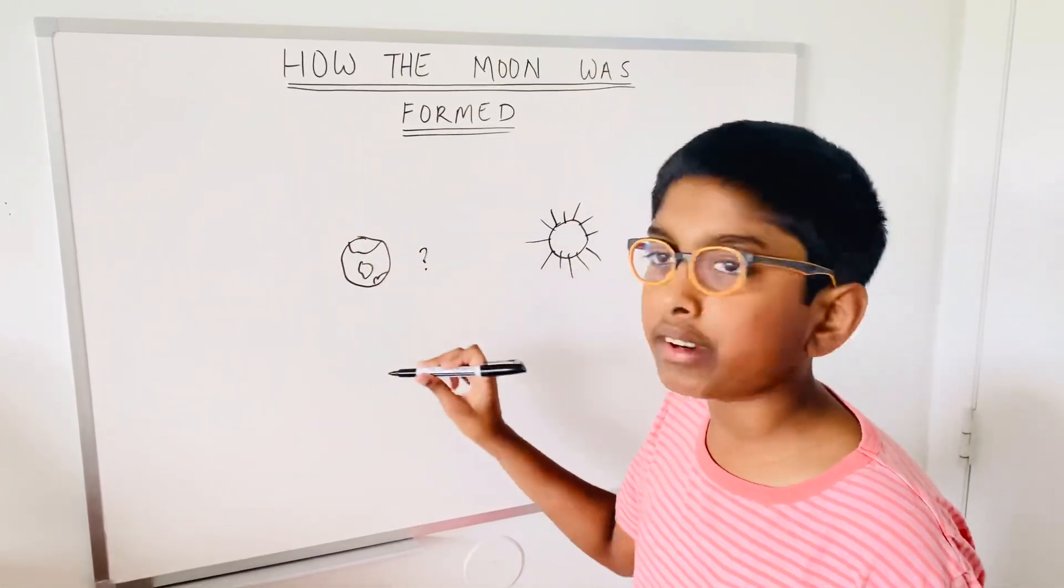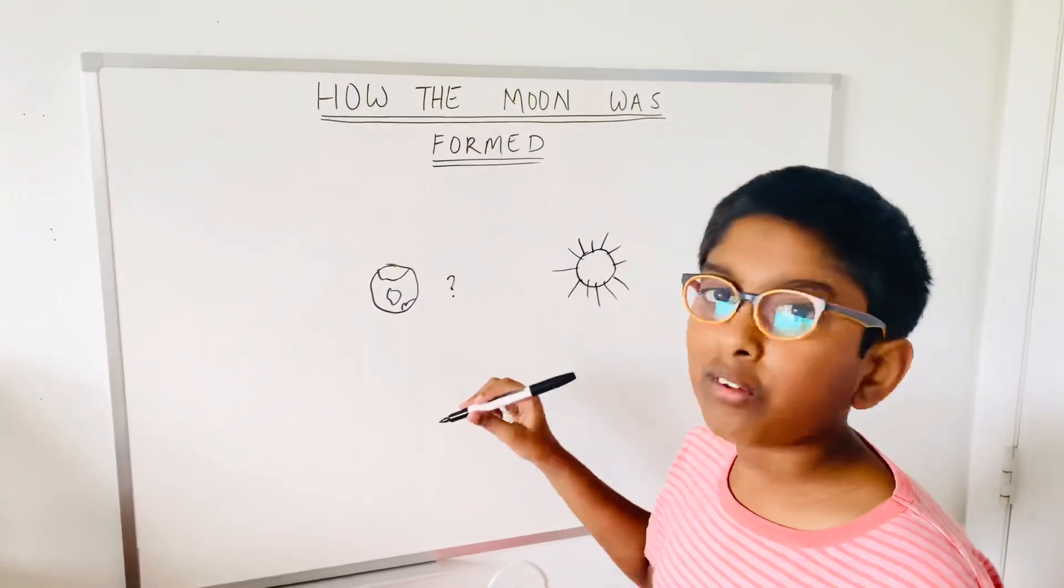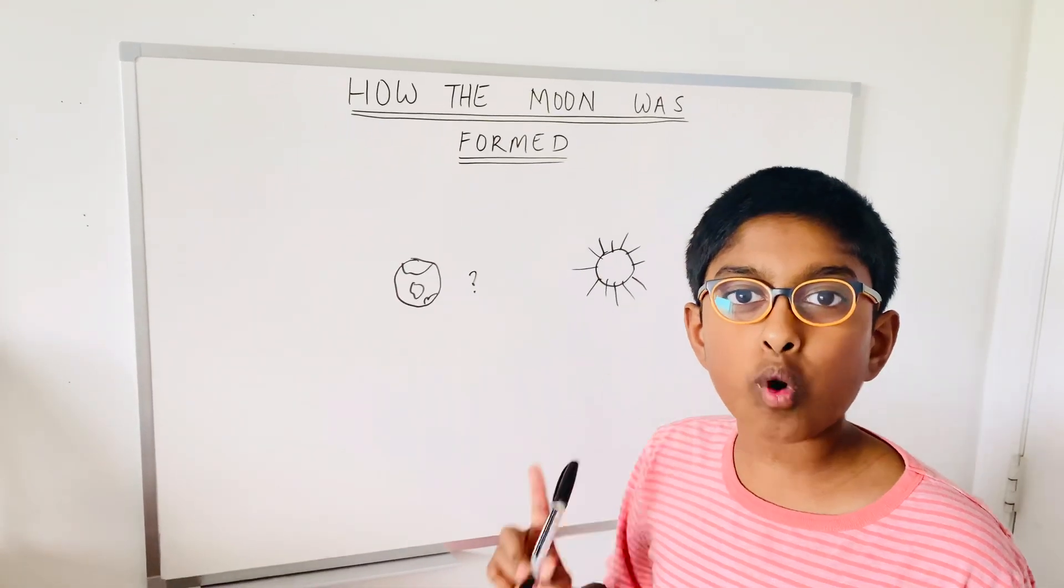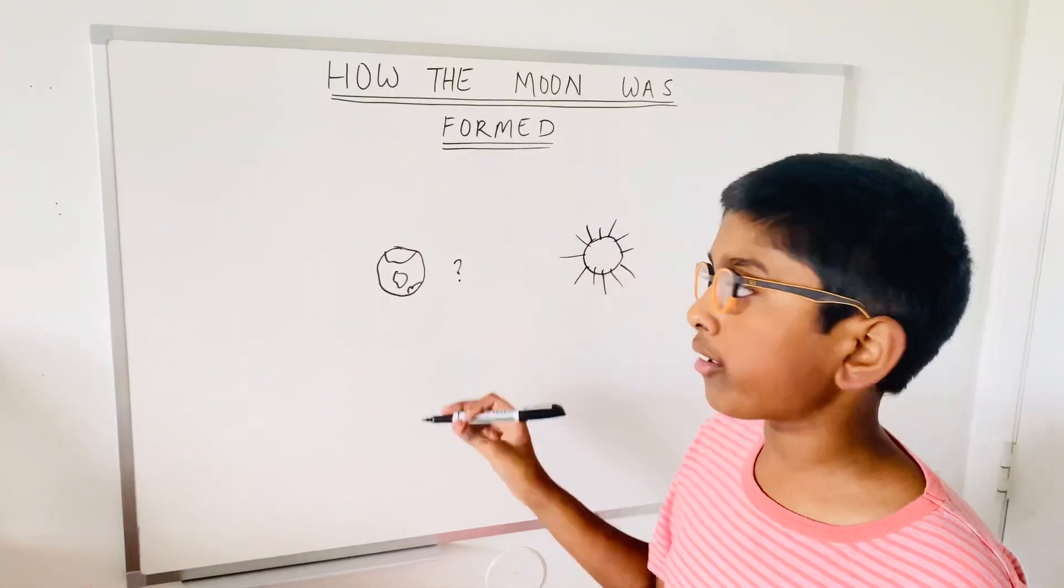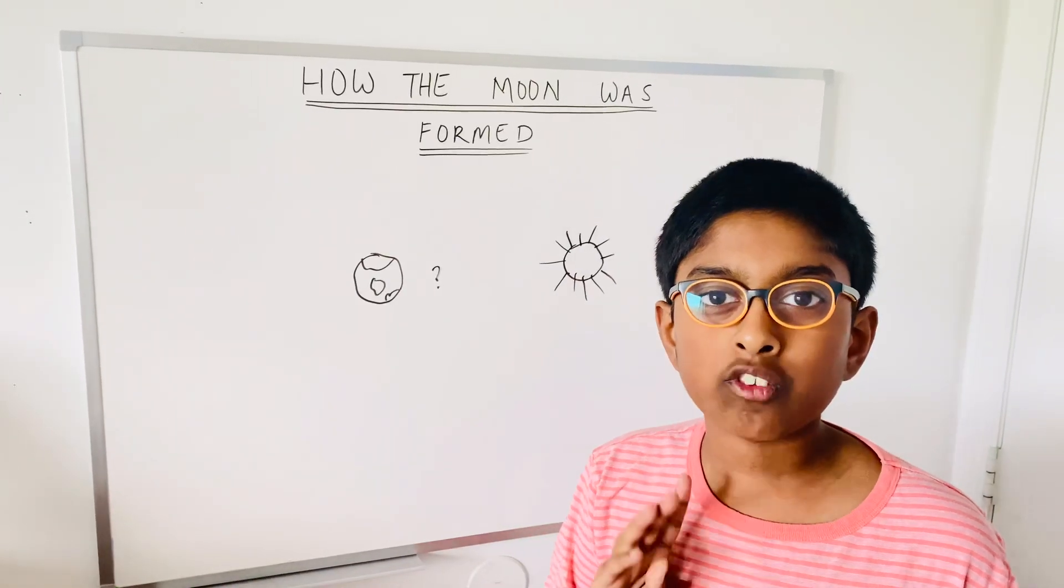That has to be orbiting Earth. Can you guess that? But what is round and it's like a planet but orbits Earth? The answer is the moon. The moon orbits the Earth. But at that time, there was no moon. Let's figure out how the moon was formed.